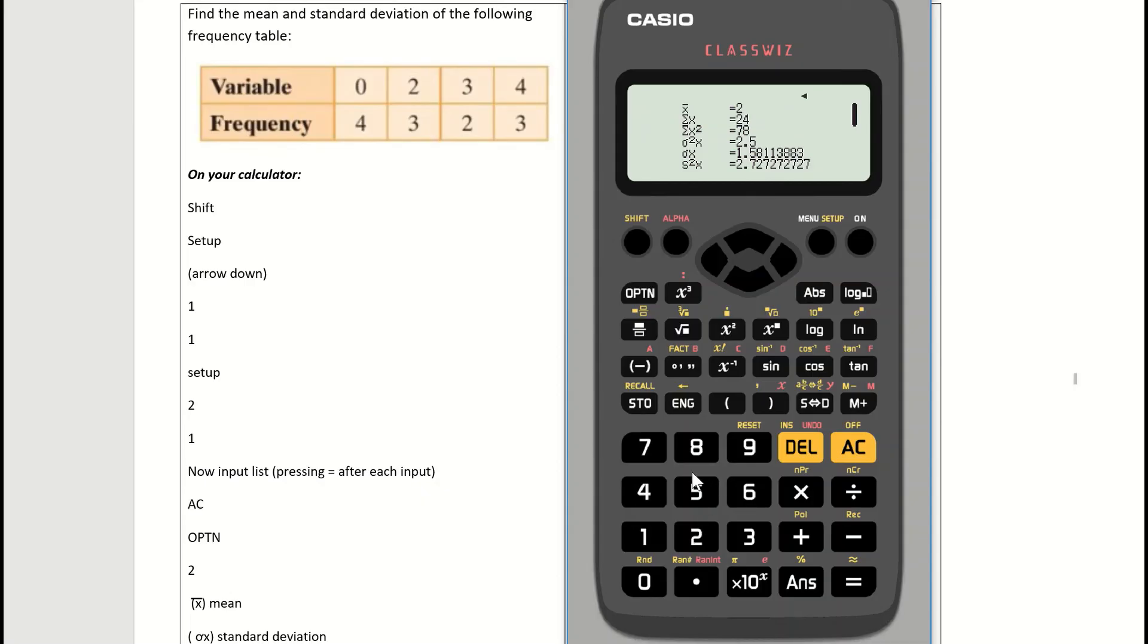There's a lot of information on this screen, but we're only concerned about x bar. The bar above it tells me that's the mean. The mean for this frequency table is two. If I go down to the symbol for sigma, that's our standard deviation symbol, and it's telling me the standard deviation is 1.58. More than likely, these are the only two pieces of data you need: the mean being x bar and sigma x being the standard deviation.